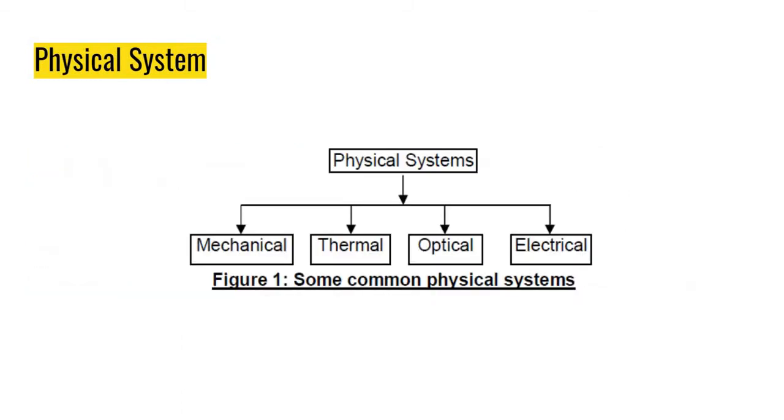Physics is built on top of mathematics and serves as a foundation for other sciences. This is the physical system. There are four types of physical systems: Mechanical, thermal, optical, electrical. And we will be discussing the mechanical, thermal, and then the optical. I think the electrical part is in the physics for engineers too.